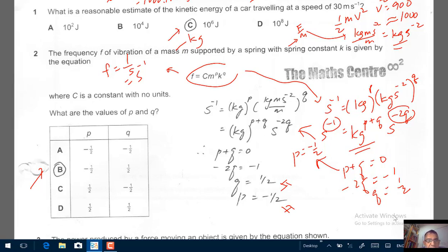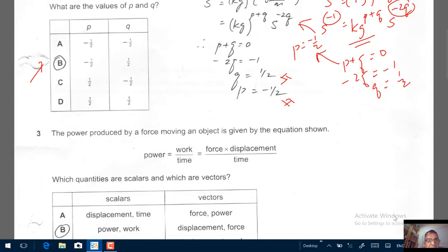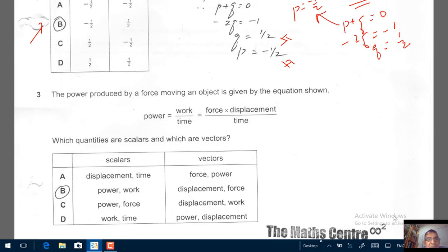Question number 3. This is pretty easy. The power produced by a force moving an object given by the equation. Work per unit time. Work is force times displacement over time. Which quantities are scalars? And which are vectors? You know that power and work, they are scalars. Straight away, you can go to correct response B. You know that power and work, they are scalar quantities.